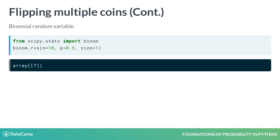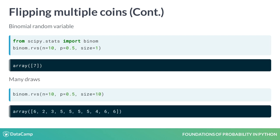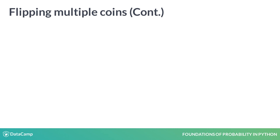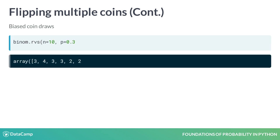We will use three arguments: n for the number of coin flips, p for the probability of success, and size for the number of draws of the same experiment. On the first execution, we got 7 heads out of 10 flips. As we can see, 5 is the result that repeats most often for a fair coin. We can also change the probability of getting heads to 0.3 and see how that affects the results, observing different outcomes using biased coins.